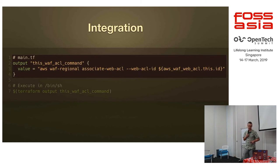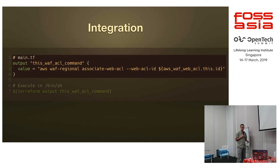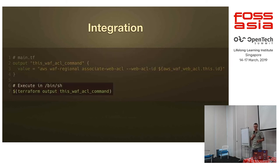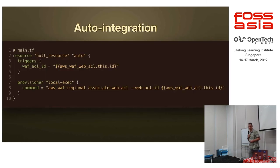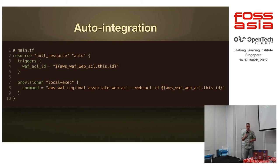Another way is to integrate: if we have created some resources and want another machine, script, or human to be able to get a command which can be executed, we can output the entire command and use it as a reference — as in this case with the web application firewall web ACL — and then execute it in shell. If we want to execute some of these commands automatically every time something changes, we can use a null resource and local-exec provider.